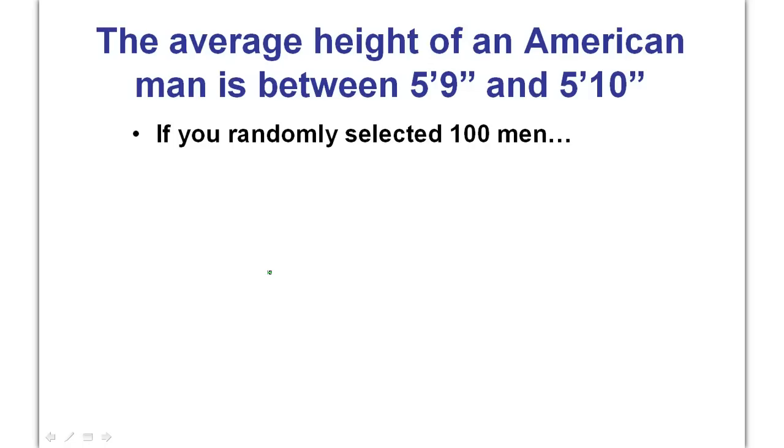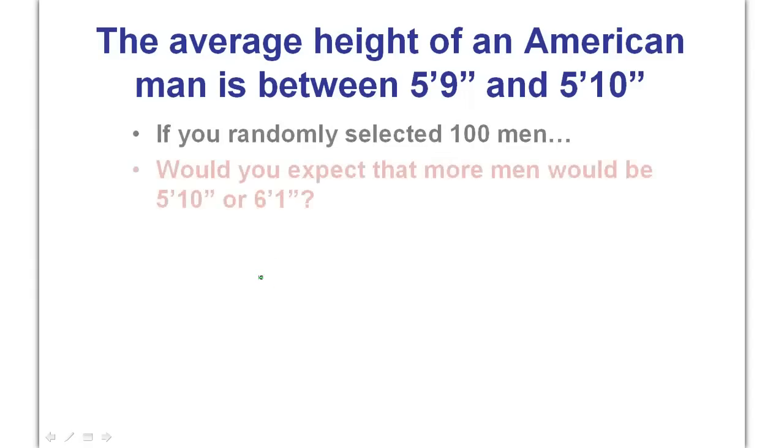Here's the deal. The average height of an American man is between 5'9 and 5'10. Now, you're going to find that you already have an intuitive idea of what a normal curve is. Say if you randomly selected 100 men, knowing that the average height is 5'9, somewhere between 5'9 and 5'10. Here's my first question. Would you expect that more men would be 5'10 or 6'1? Probably 5'10.